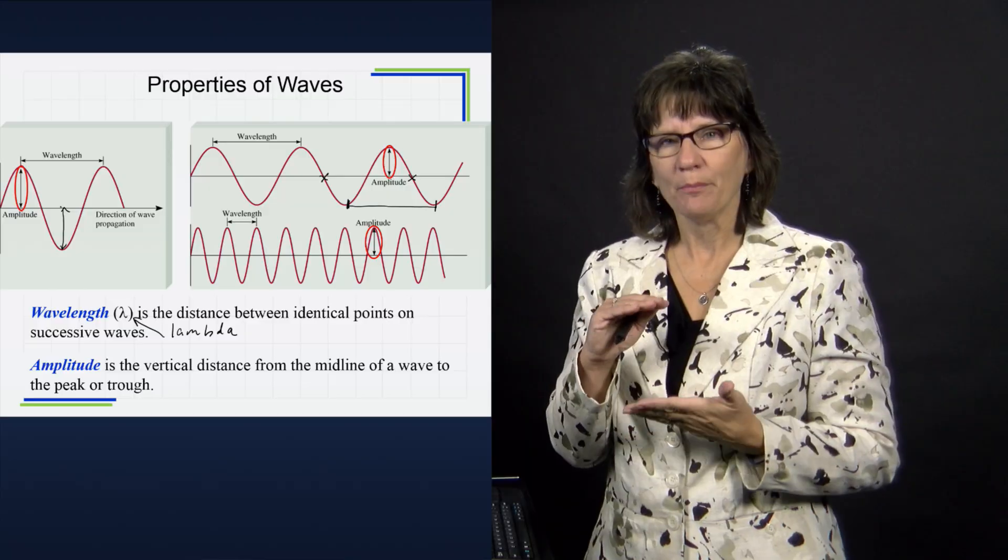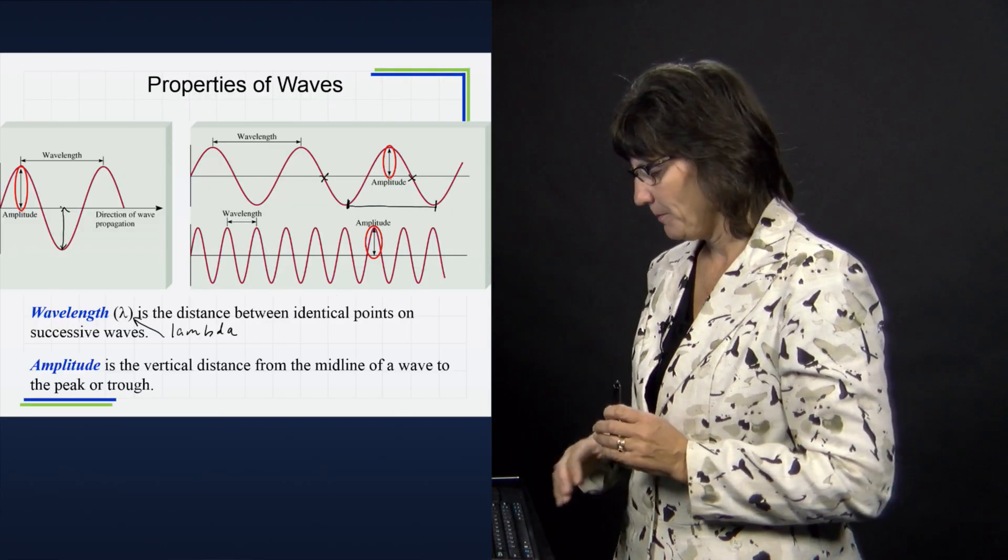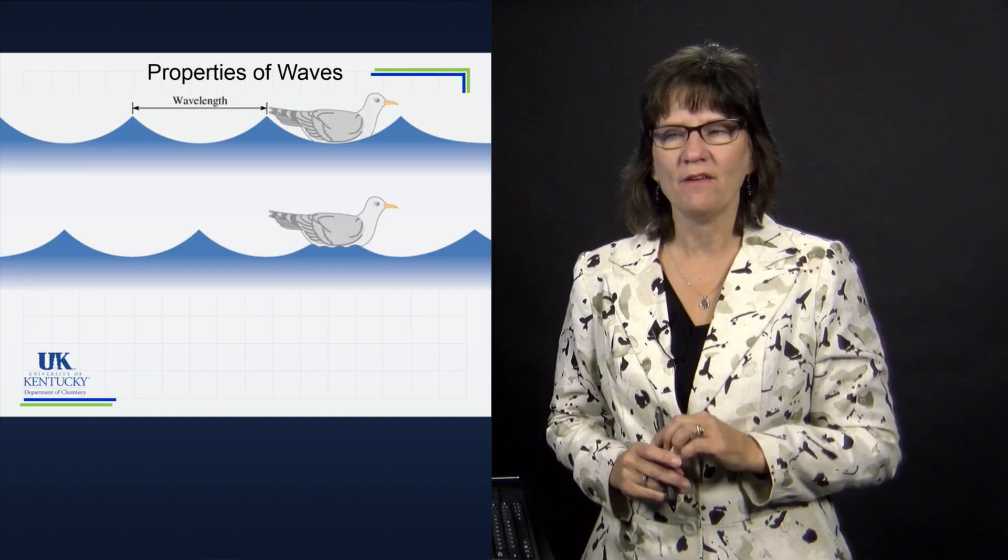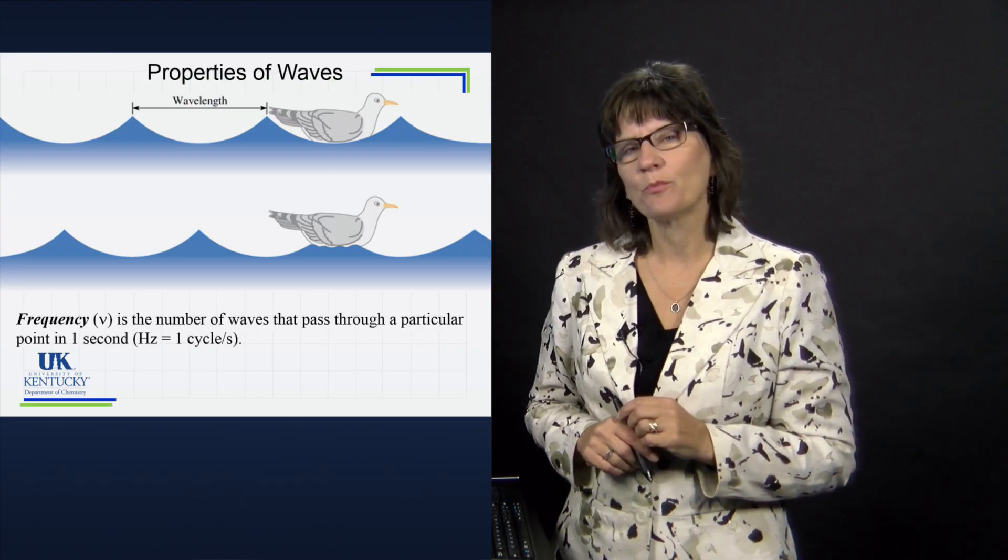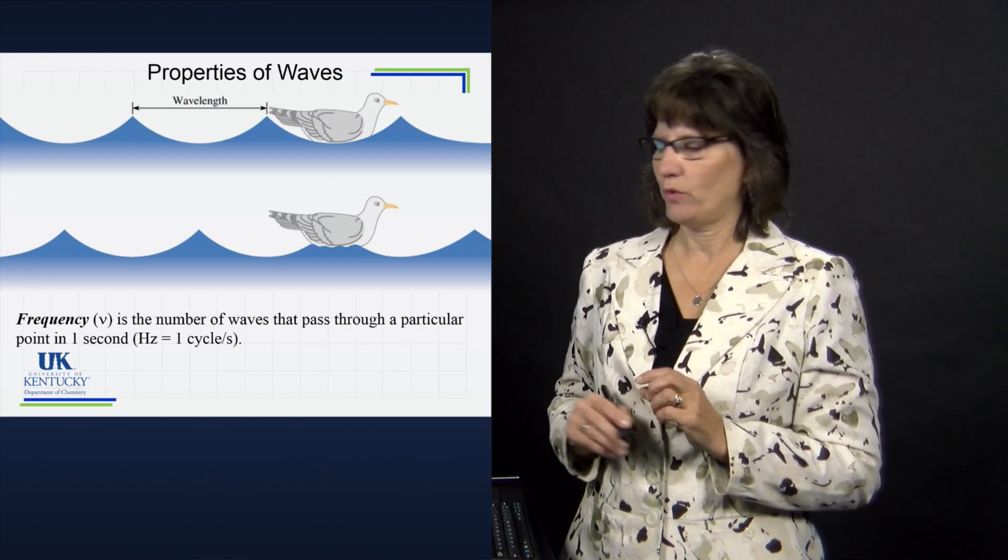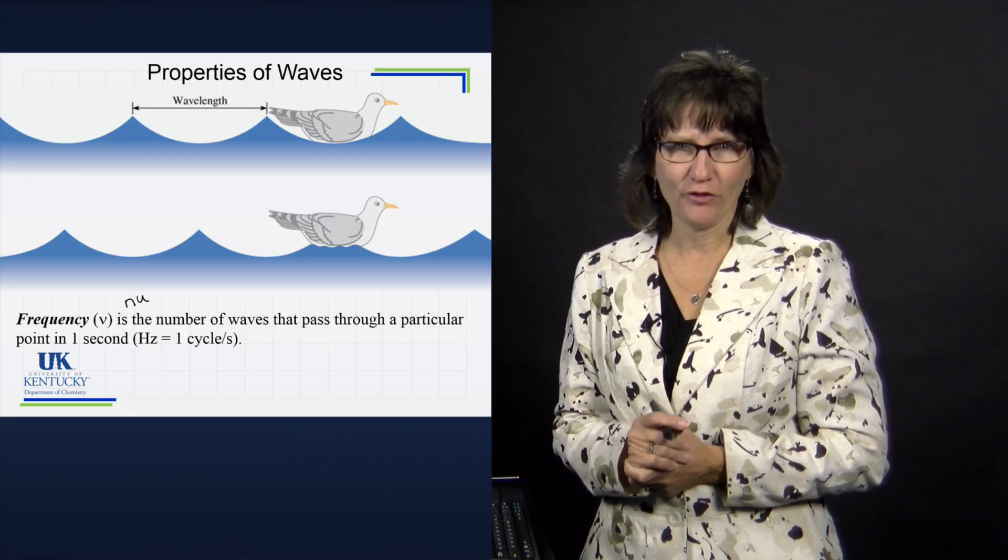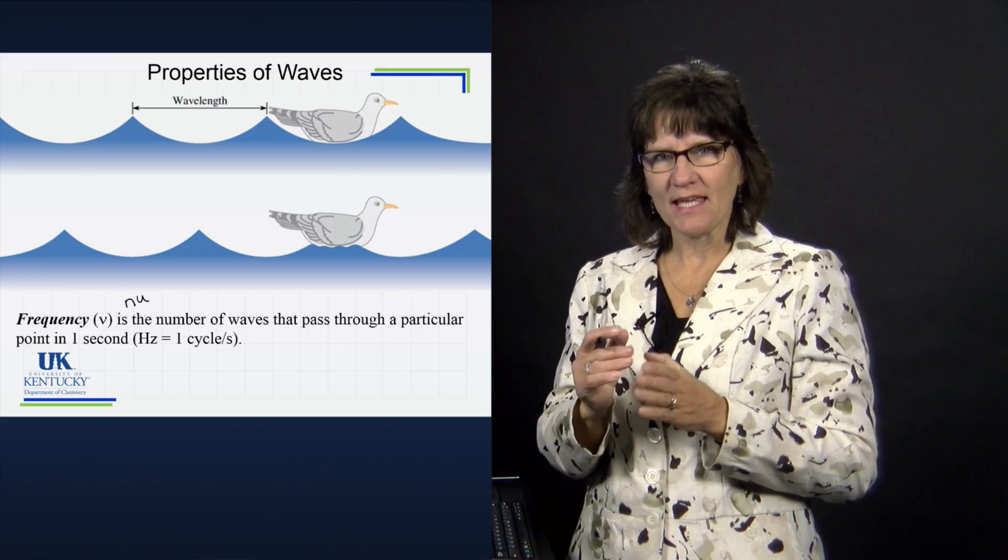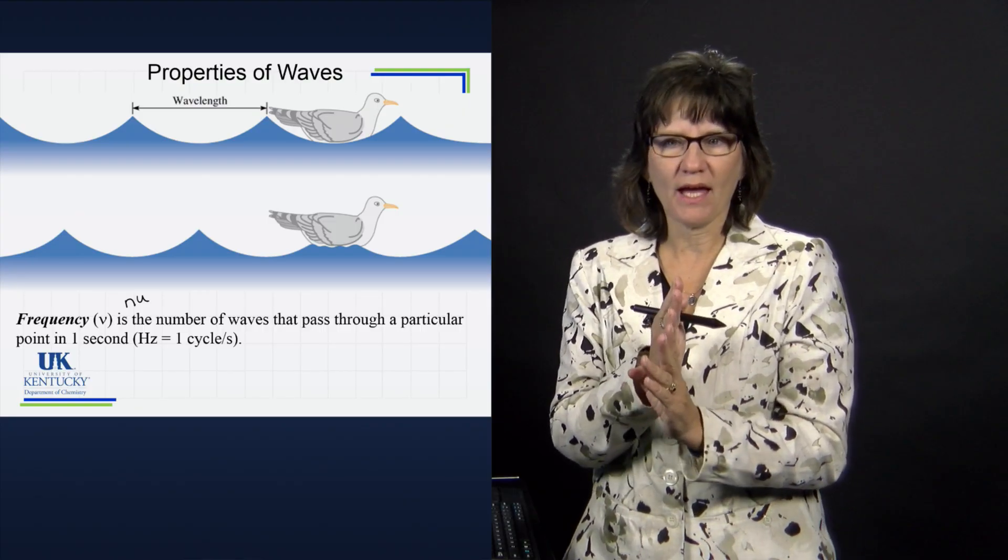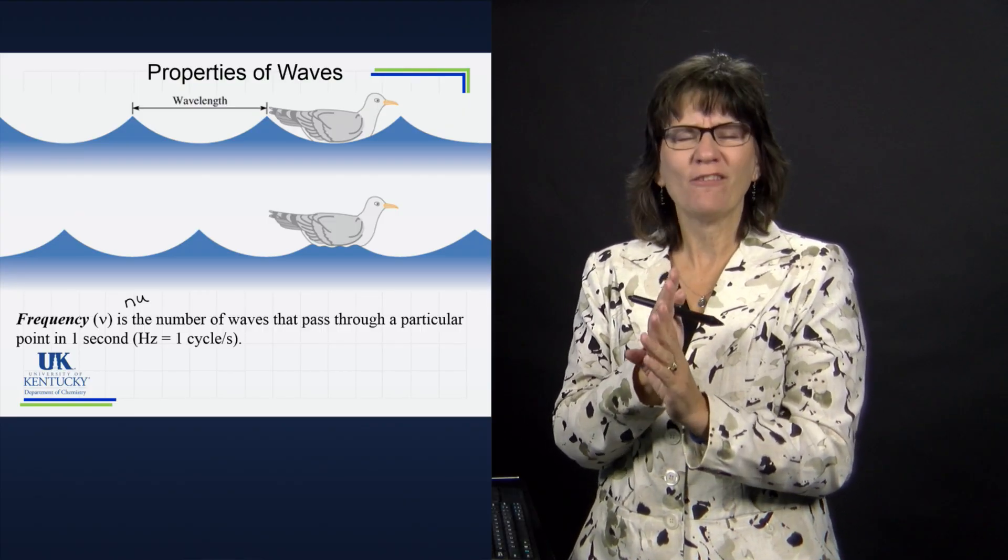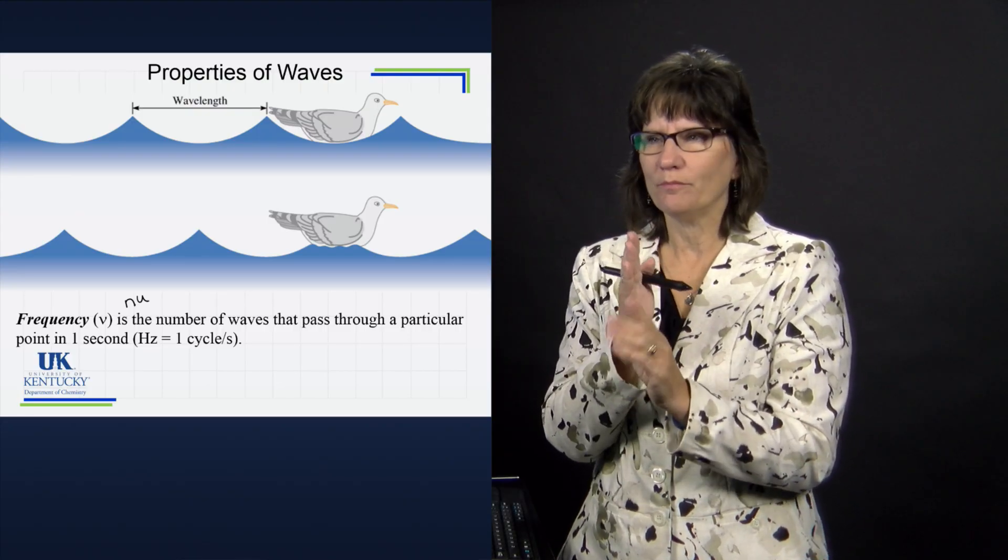So amplitude is what we associate with the energy of a wave. The next property is frequency. Frequency is abbreviated with a nu (ν) - it looks like a v to the untrained eye, but it's a nu. Frequency is how many waves will pass by a fixed point in a second. We always do it in a second.